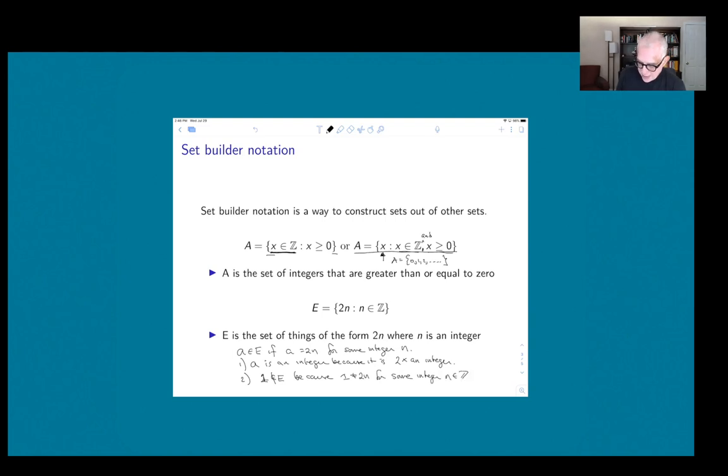And in fact, this is a way of writing the even numbers. E is minus...let's use dot dot dots...minus four, minus two, zero, two, four, six, and so forth. It's the set of even numbers, because the even integers are exactly the even integers that are of the form two times another integer.